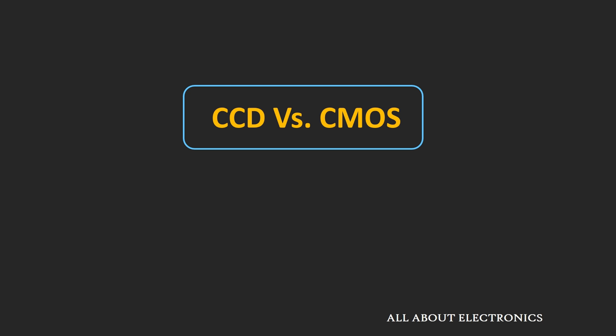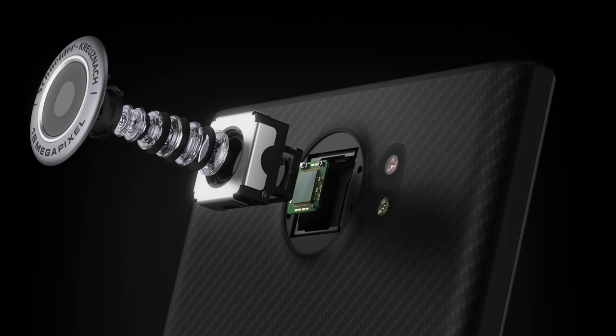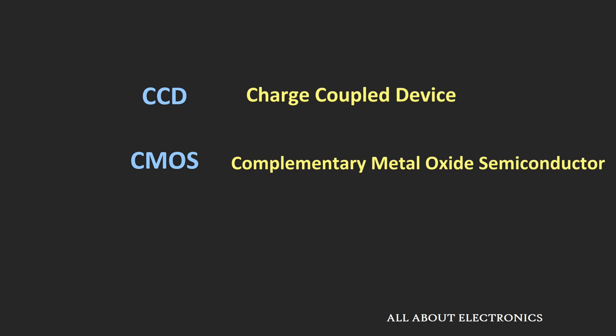Welcome to the YouTube channel All About Electronics. In this video, we will learn about the different image sensors which are used in digital cameras and modern day smartphones. We will also learn how these image sensors work and at the end we will compare them in terms of different aspects. Two types of imaging sensors commonly used are CCD, which is the charge coupled device, and CMOS, that is complementary metal oxide semiconductor.